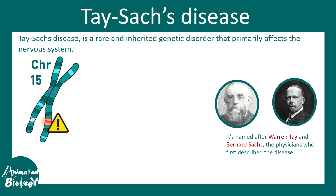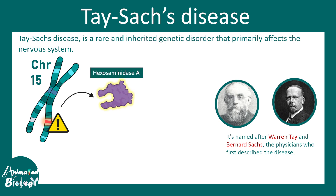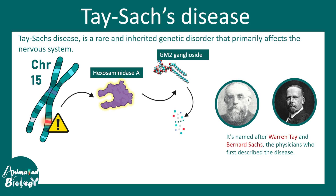In this case there is a mutation in chromosome 15, and this mutation is in the gene that encodes for the enzyme hexosaminidase A. This particular enzyme is responsible for breaking down GM2 ganglioside lipid — this lipid is broken down, or catabolized, by this enzyme.